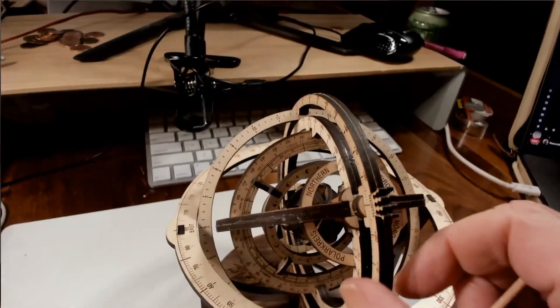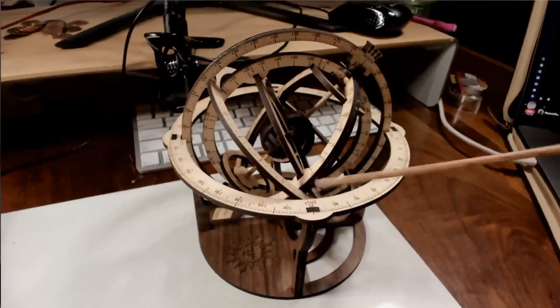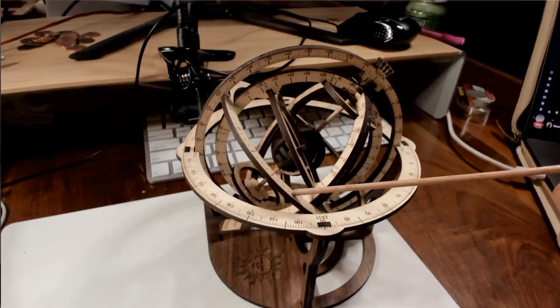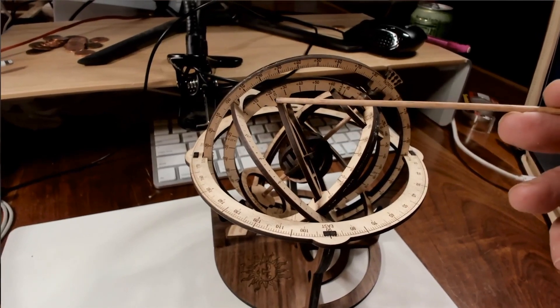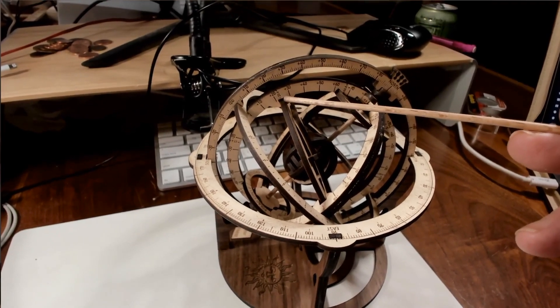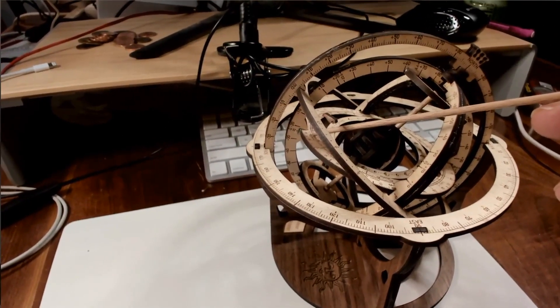Now you'll also notice something else about the ecliptic. It's tilted in reference to our equator ring. So this is the equator, and here is the ecliptic ring. It goes up to a maximum of 23.5 degrees north. Then it comes down here to 23.5 degrees south.